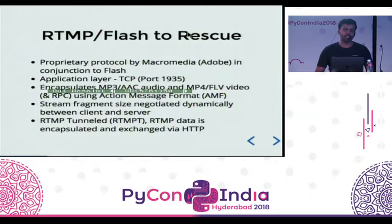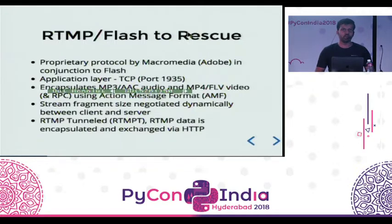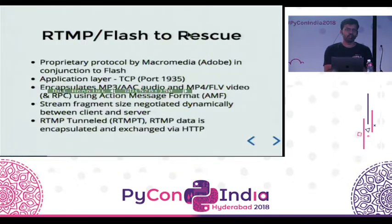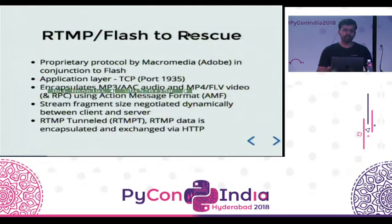Now enters RTMP, or Flash as we know it. RTMP has been in the industry for around 12-13 years. It was originally made by Macromedia, which was later acquired by Adobe. RTMP is an application layer protocol which works on TCP port 1935 by default. It encapsulates Flash files, which can have MP3 and AAC audio and MP4 and FLV video. There were also options for RPC using RTMP. All the packetization was done by Action Message Format, or AMF, also built by Adobe.